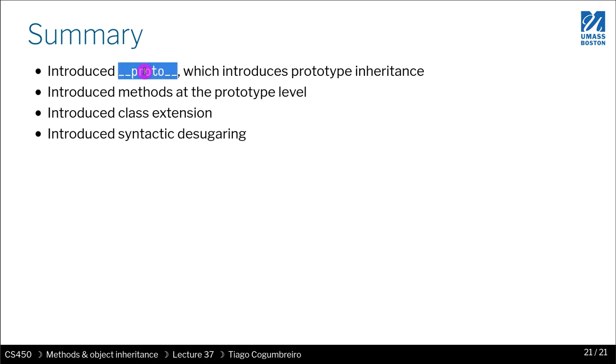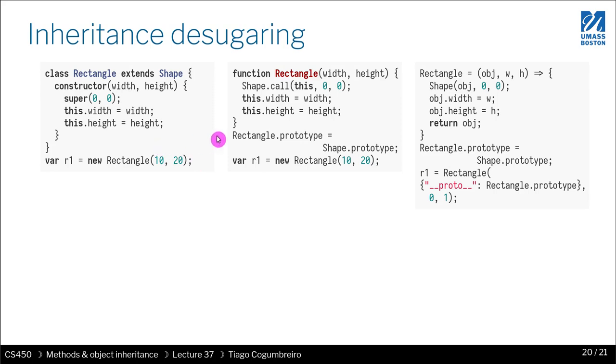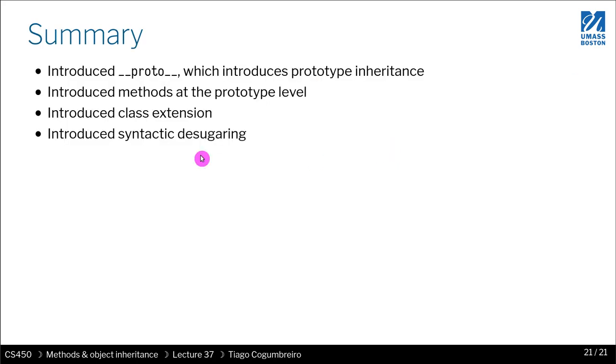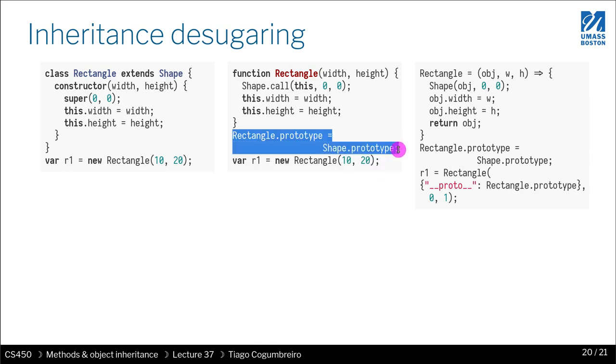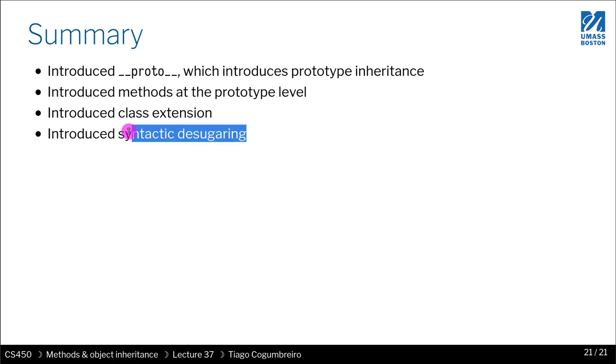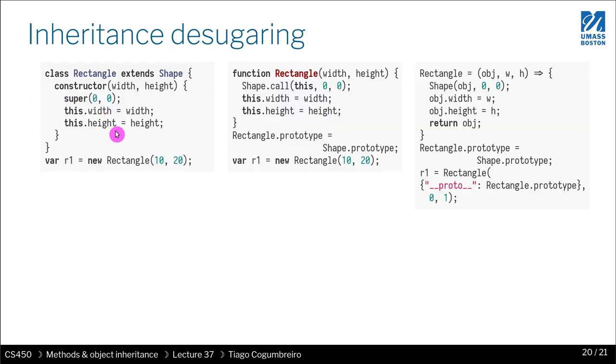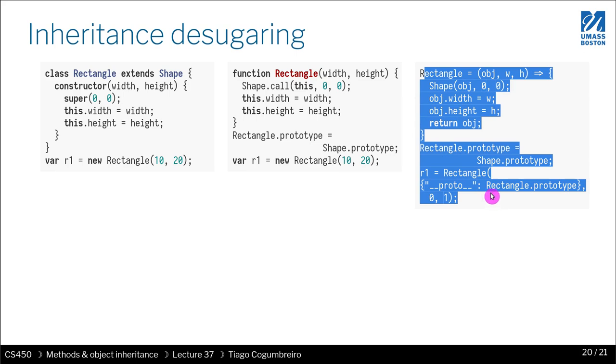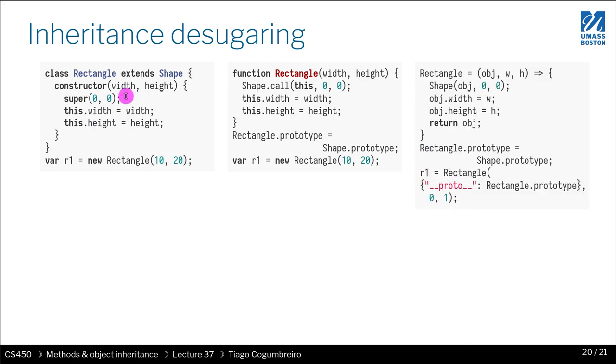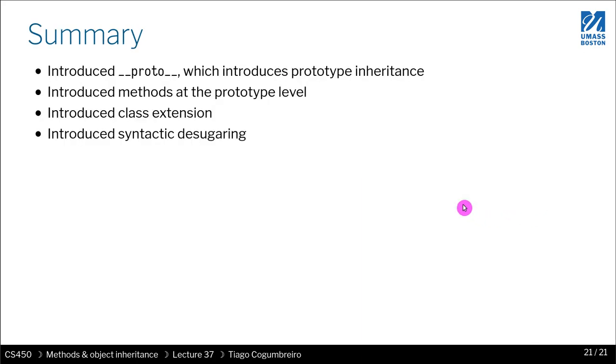So in summary, what have we learned? We learned about the special field underscore underscore proto. We introduced methods at the prototype level. So that would be this version. We introduced class extension, which is just copying the prototype. It's basically what we're doing. And we introduced syntactic desugaring, which is source-to-source translation, making something simpler so that it's easier to implement. This version is easier to understand. So that's something you would want your users to use. But this is what you want if you are implementing code. If you are implementing JavaScript, this is all that you want. So to have a process that kind of simplifies the syntax so that you have something simpler to implement. That is the key takeaway. I hope you had fun.